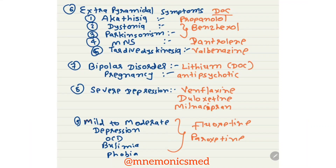For extrapyramidal akathisia, drug of choice is Propranolol. For dystonia and Parkinsonism, it is Benzhexol. For NMS (Neuroleptic Malignant Syndrome), it is Dantrolene. For tardive dyskinesia, it is Valbenazine.